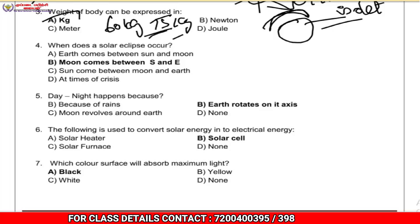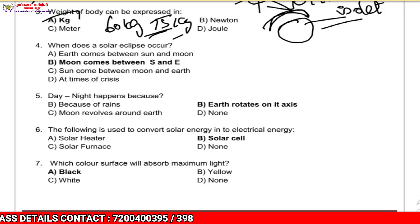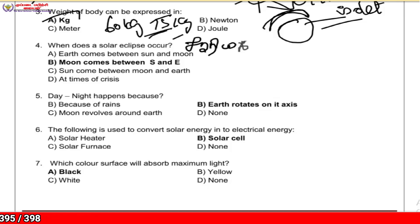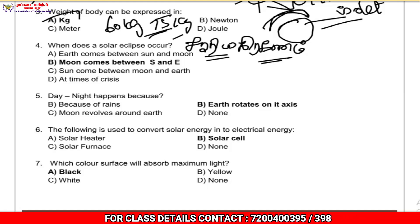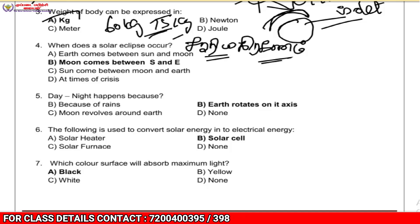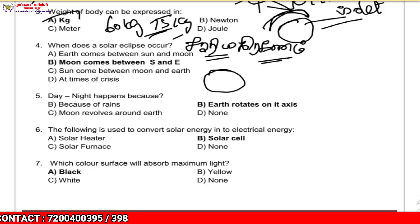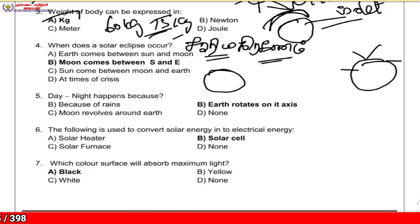When does a solar eclipse occur? This is the solar eclipse — 'Surya Grahanam' is the name for solar eclipse. We will be aware of the Sun.